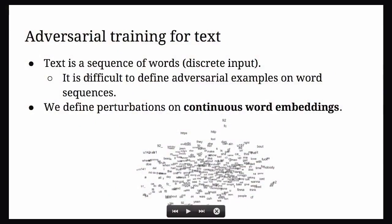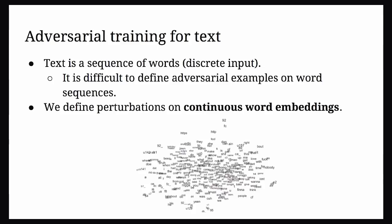I'll be covering adversarial training and virtual adversarial training by Miyato, which is the semi-supervised case. For text, the problem is that the input is a sequence, and secondly that sequence is discrete, which causes problems with gradients. We get around that by operating on the word embeddings, defining the perturbation on the word embedding rather than going back to the original discrete input space. This is also possible because we aren't using these examples as any kind of attack.